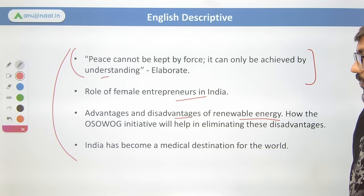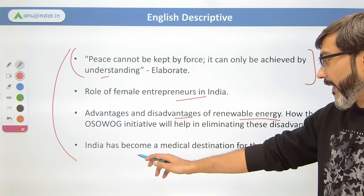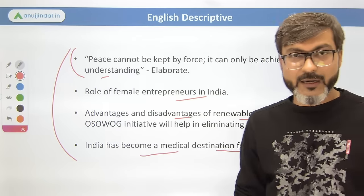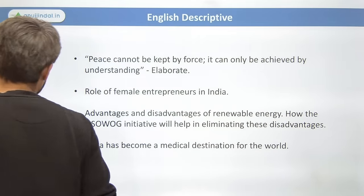In English descriptive for 2022, they tried a philosophical approach — for example, 'Peace cannot be kept by force; it can only be achieved by understanding' — trying to emulate UPSC-style essays. However, in 2023 they came back to basics: role of female entrepreneurs in India, advantages and disadvantages of work-from-home, and India has become a medical destination for the world. These were the essay topics for 2022.